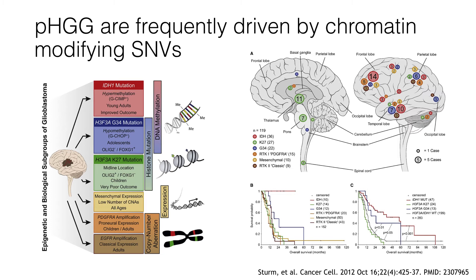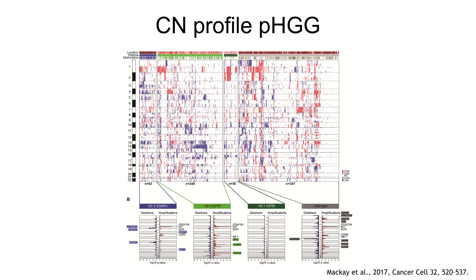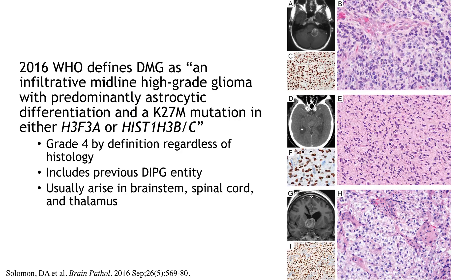Pediatric high-grade gliomas, by contrast, are often driven by point mutations in chromatin-modifying genes such as histone 3. Many of these tumors do not have highly stereotypical copy number profiles. So again, much like the pediatric low-grade gliomas, a next-gen sequencing approach is probably of highest yield in attempting to diagnose these tumors accurately.